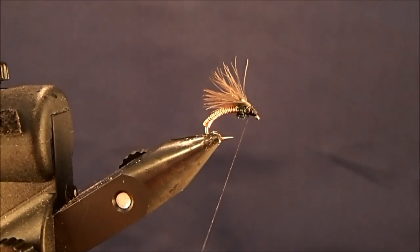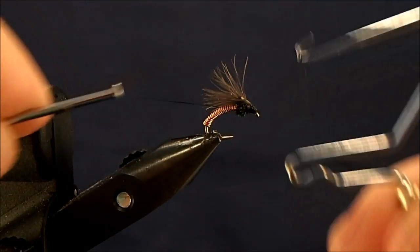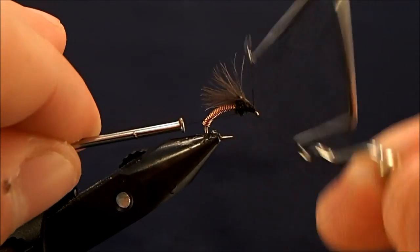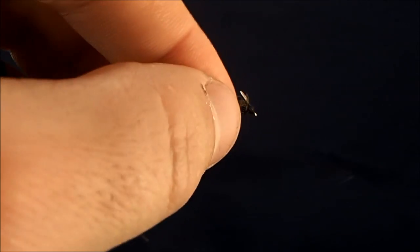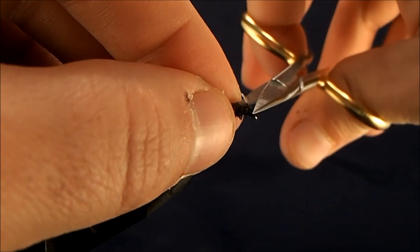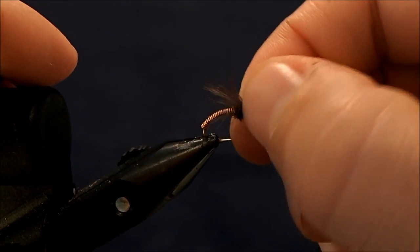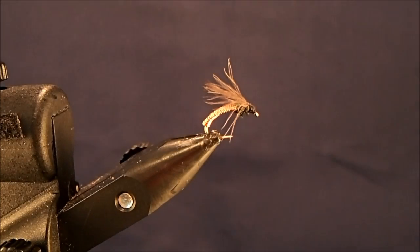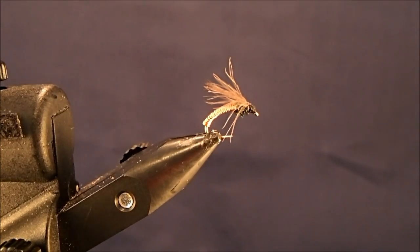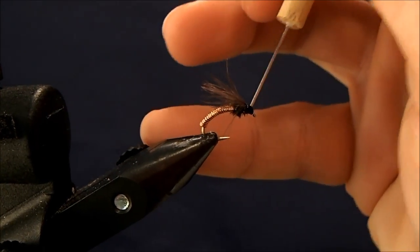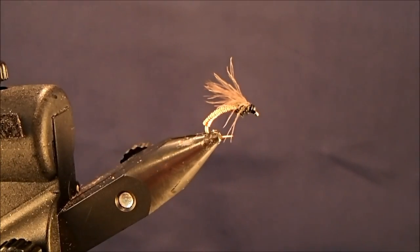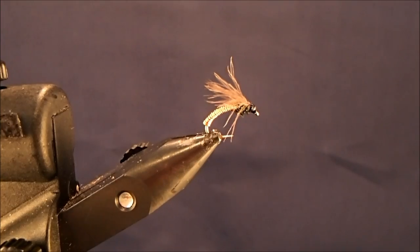Once I'm satisfied with the way that looks, then I can just whip finish the front of it. And trim off the excess. And spread that out. And then to this, I'll just add a drop or two of head cement. Make sure not to get any on the CDC to bind those up. And then that fly is finished.